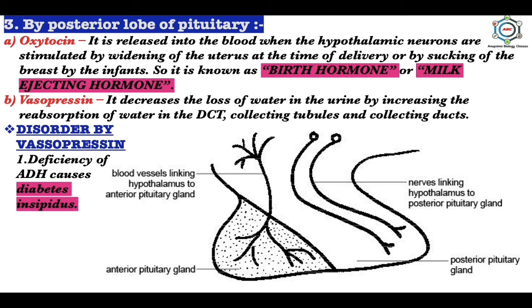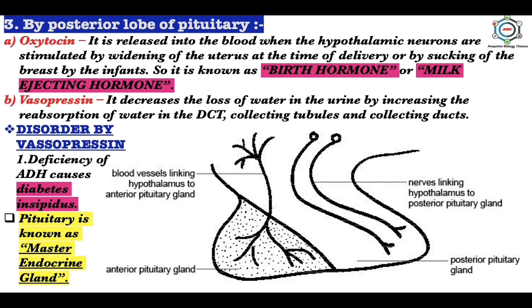Disorders caused by vasopressin: deficiency of ADH causes diabetes insipidus. Because of ADH deficiency, reabsorption of water is reduced and urine output increases, causing excessive thirst, but no glucose is lost in the urine of a diabetes insipidus patient. The pituitary is known as the master endocrine gland because of the number of hormones it produces and its control over other endocrine glands.